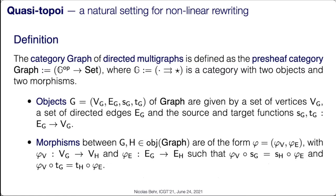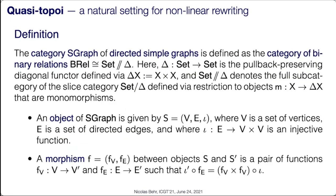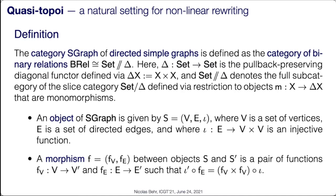The two running examples of the paper and talk are the standard category of directed multi-graphs formulated as a pre-sheaf topos — in particular a quasi-topos — with edges, vertices, and possibly multiple edges between two vertices. The slightly less known variant is simple directed graphs, which can have at most one loop at a vertex. Simple graphs are coded as a set of vertices, set of edges, where each edge has endpoints, and the map from edges to their endpoints has to be injective, ensuring at most one edge in a given direction between two vertices.